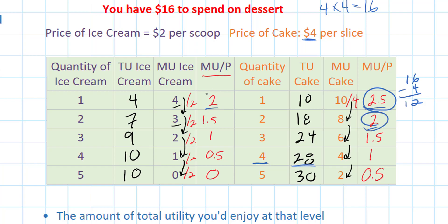I'm going to buy a second slice of cake and a first scoop of ice cream — that's going to cost me six dollars, leaving me with six dollars left to spend. What should I buy next? Should I buy a third slice of cake which provides me with 1.5 utils per dollar, or a second scoop of ice cream which also provides 1.5 utils per dollar? I'm indifferent between these and I can afford both.